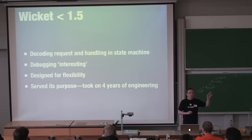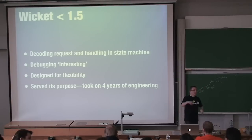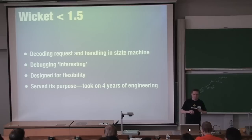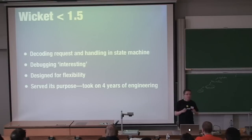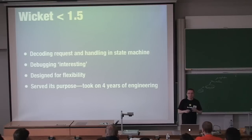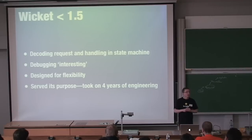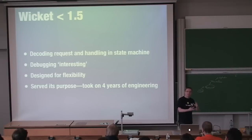We simplified the request cycle. In previous Wicket versions, request handling was done in a state machine — if you ever debugged into Wicket internals you'd notice the 'steps' counter, and if the number of steps exceeded 10,000 an exception was thrown. That's gone. The old request cycle was designed for flexibility early on, but after four or five years it accumulated many bug fixes and new functionality.